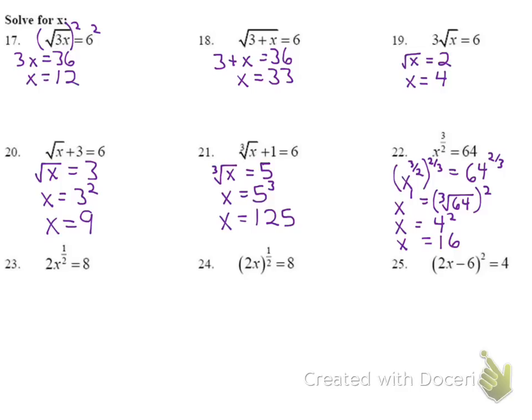For number 23: first isolate the exponent by dividing both sides by 2, giving x to the 1/2 equals 4. The reciprocal of 1/2 is 2, so squaring both sides gives x equals 4 squared, meaning x equals 16.